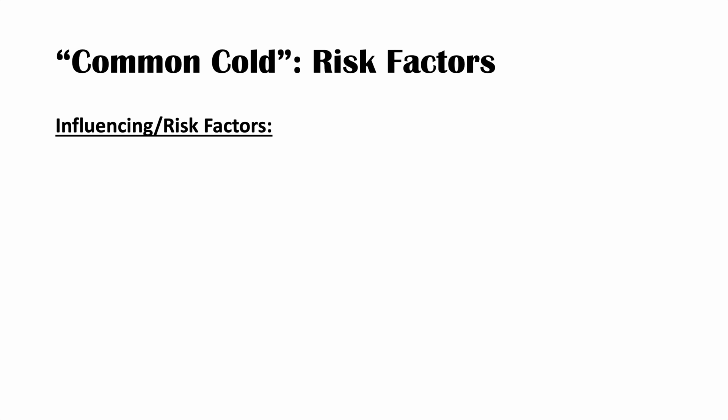The most important risk factor for getting the common cold is sick contacts. If we don't have sick contacts, we're less likely to become infected, though you can still get it from fomites. A major category of sick contacts is daycare children, who are estimated to have six to eight common colds per year. If you're exposed to daycare children more often, you're more likely to get the cold yourself.